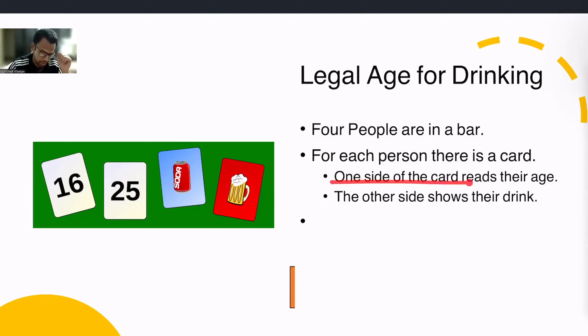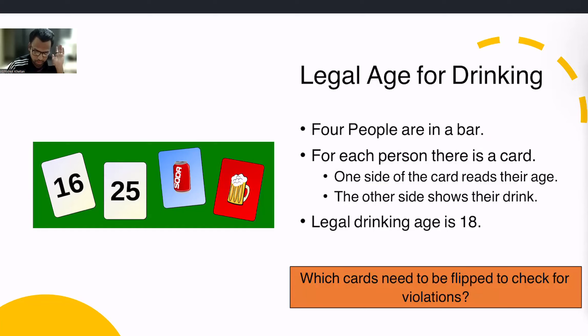For each person, there is a card. One side of the card reads their age, the other side shows their drink. Four cards are here. The legal age for drinking is 18. So far, so good. Question is, which cards need to be flipped to check for any violations?